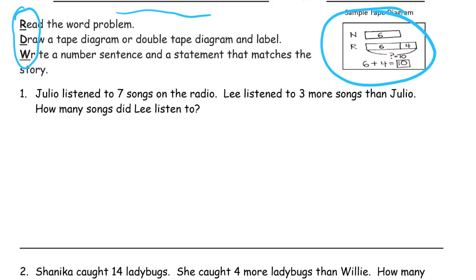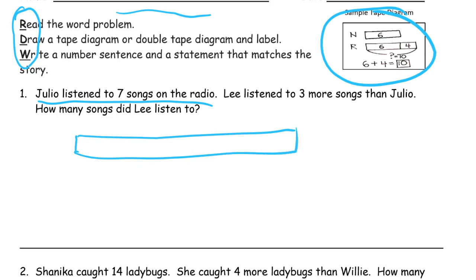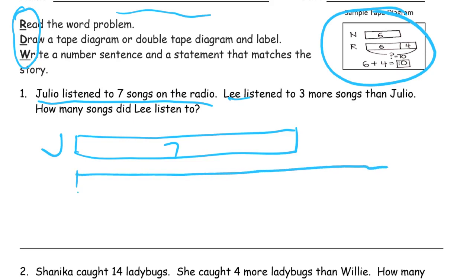So what do we know? That's what we're going to draw on our tape diagram. Julio listened to seven songs on the radio — I'm just looking at that first sentence and I'm going to draw a piece of tape that says seven songs in it. And it's labeled J for Julio. That's it.